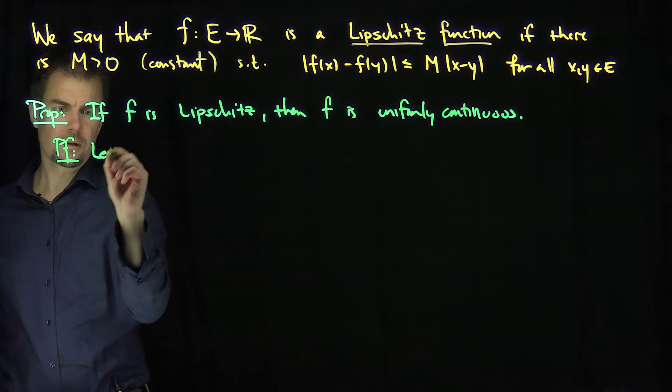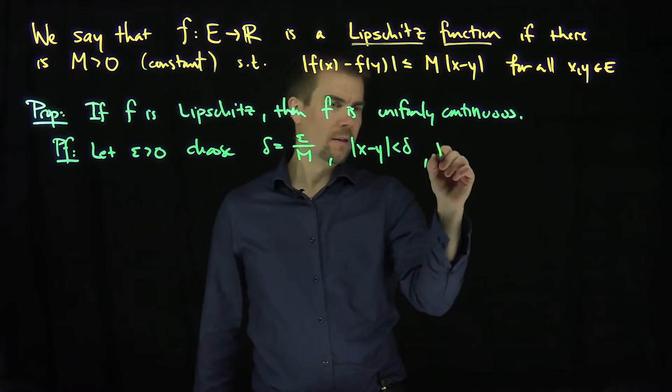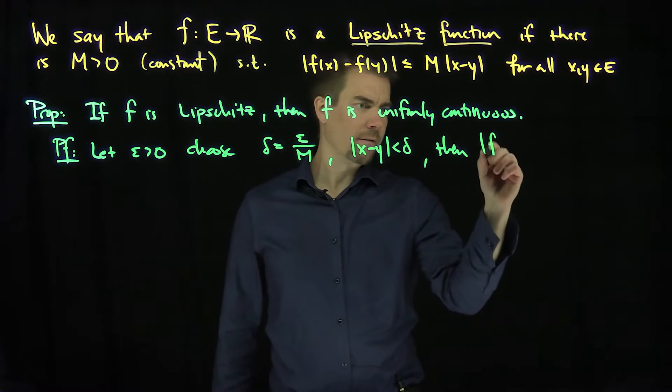The proof is straightforward. If we let epsilon be greater than zero, we can choose delta to be epsilon over the Lipschitz constant M. Then, if |x - y| is less than delta, then |f(x) - f(y)| is less than or equal to M|x - y| by the Lipschitz assumption.